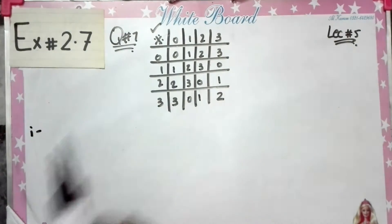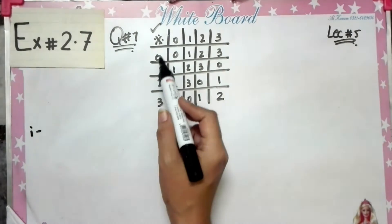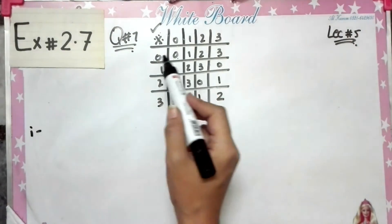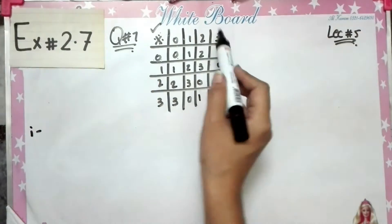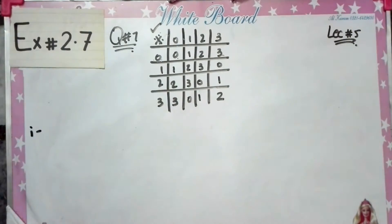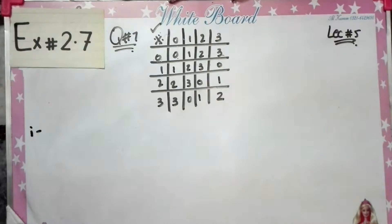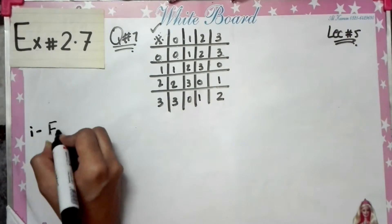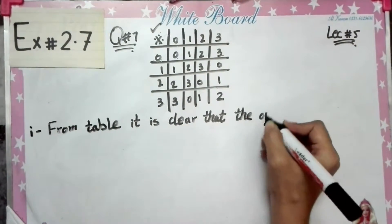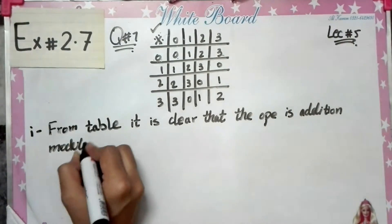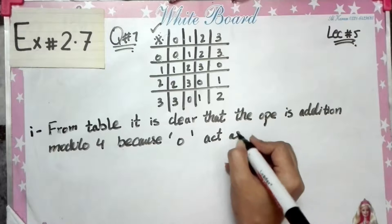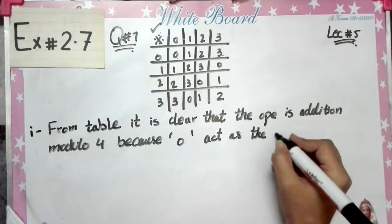0 acts as an identity. How? 0+0=0, 0+1=1, 0+2=2, 0+3=3. This means the operation performed here is addition modulo 4, because 0 acts as the identity element.